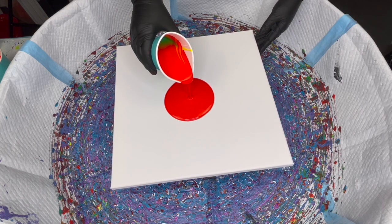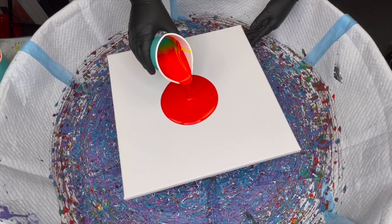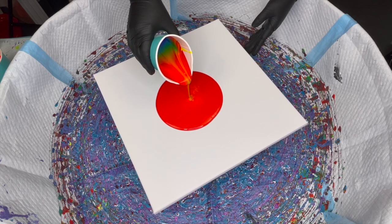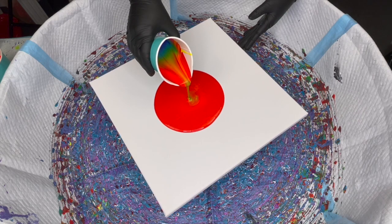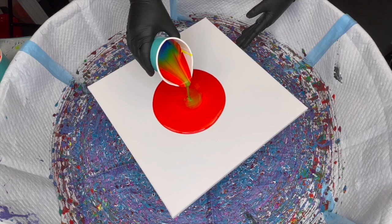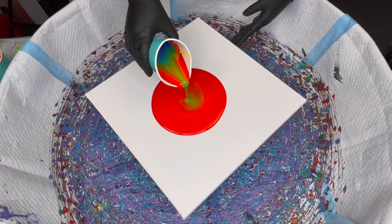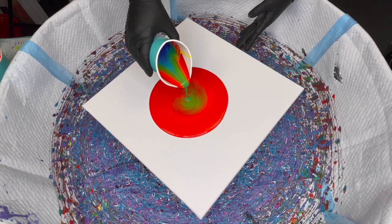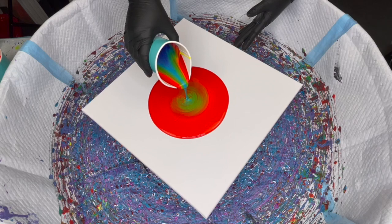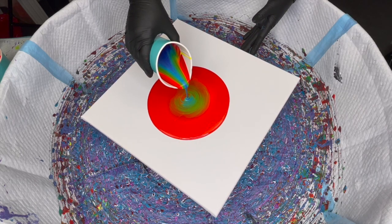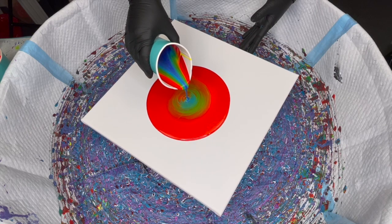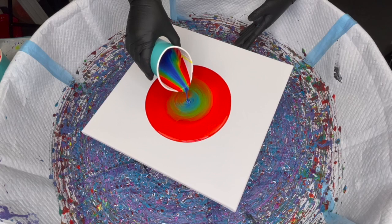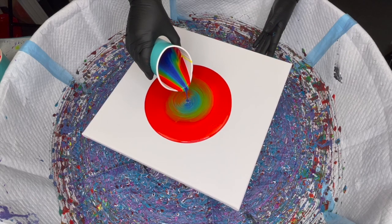Here comes the orange and the yellow. There's some green. Here comes the blue and the darker blue.